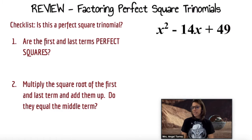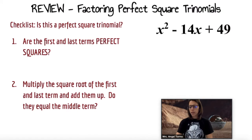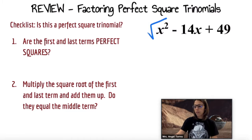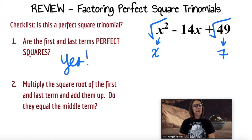Example two: is this a perfect square? Are the first and the last terms perfect squares? Let's see. Square root of x squared is x. Square root of 49 is 7, so yes.